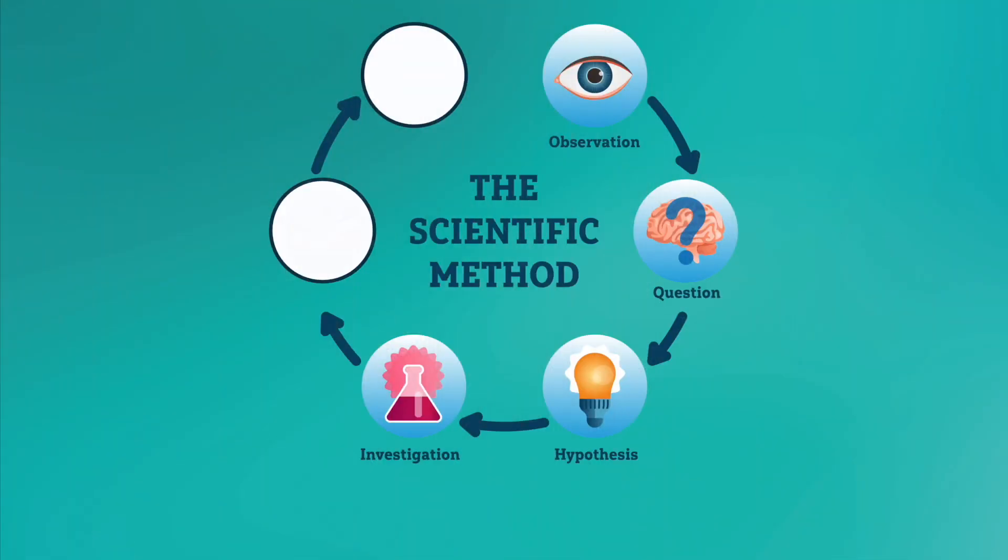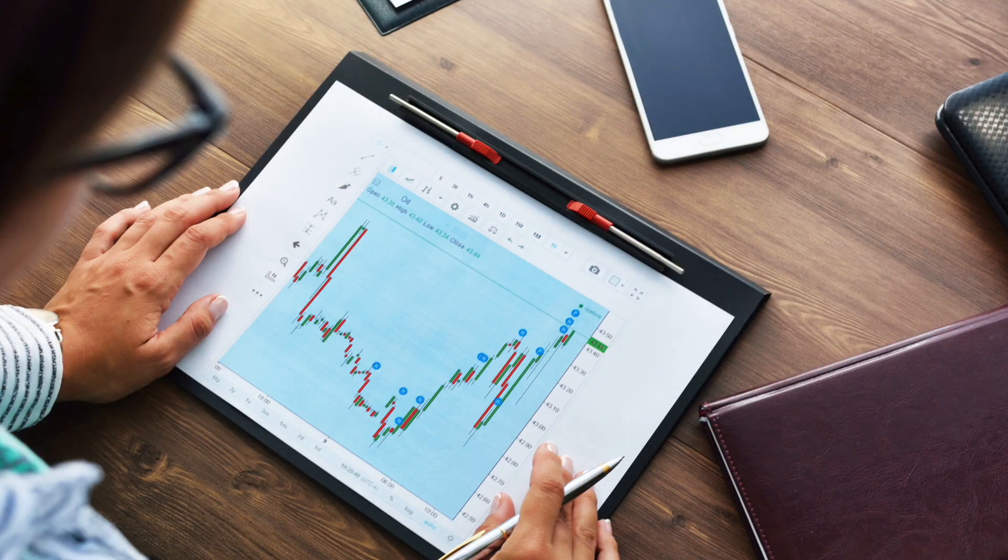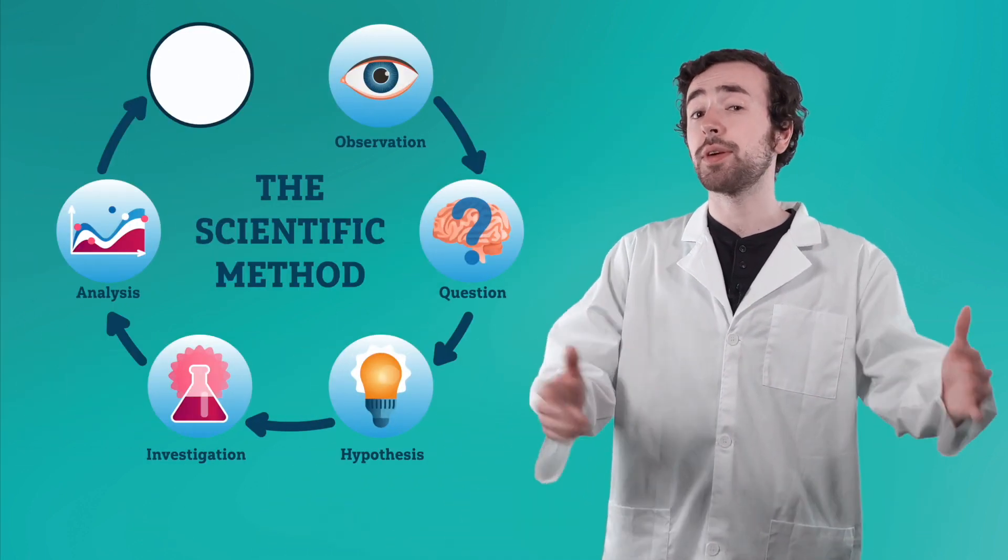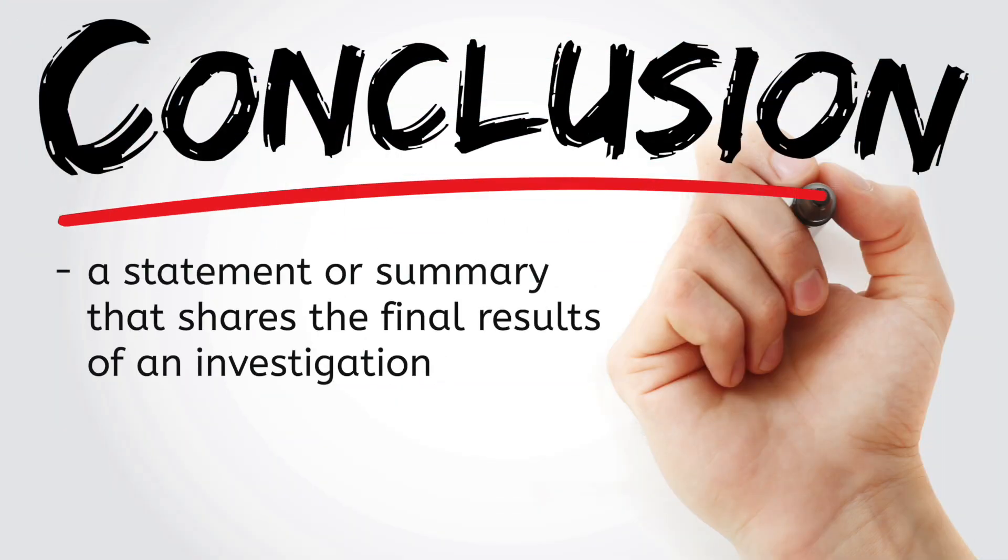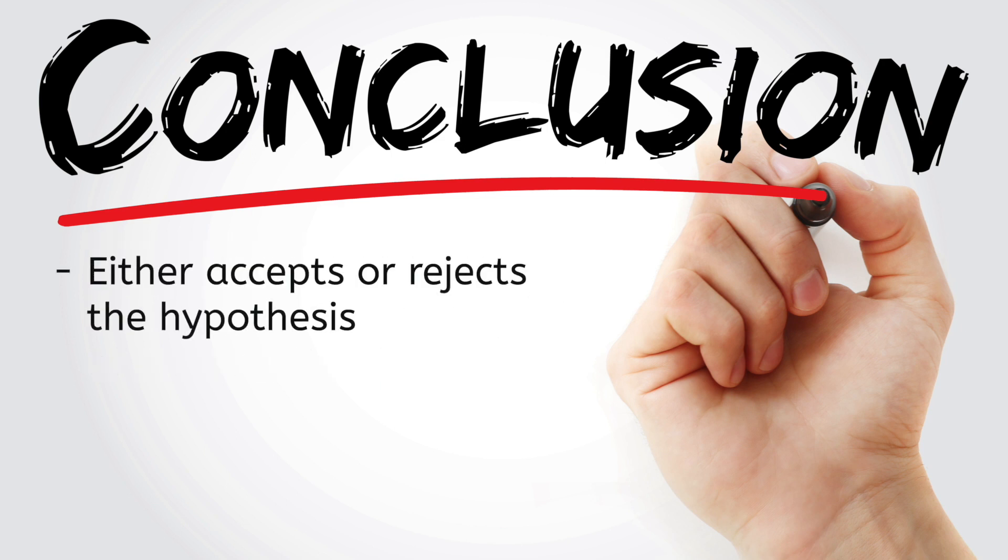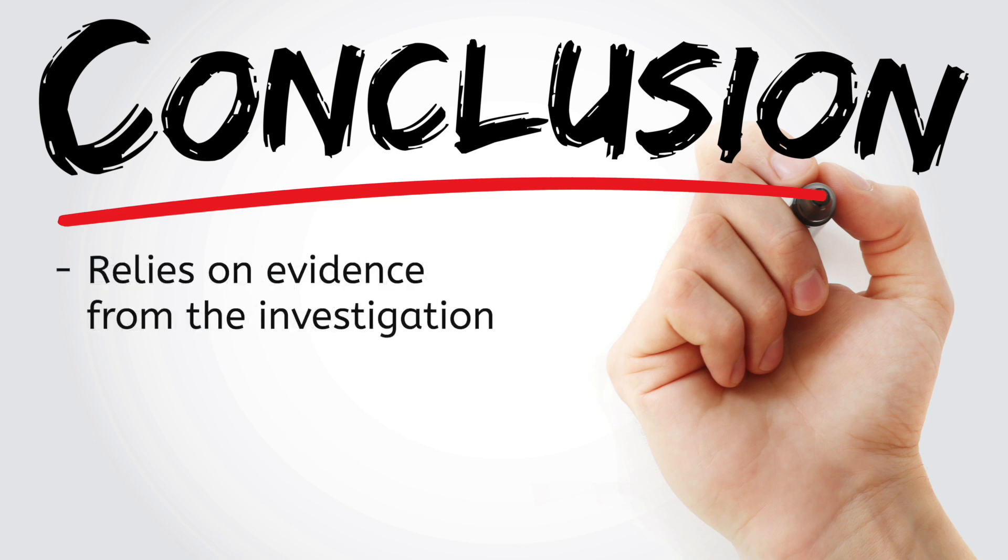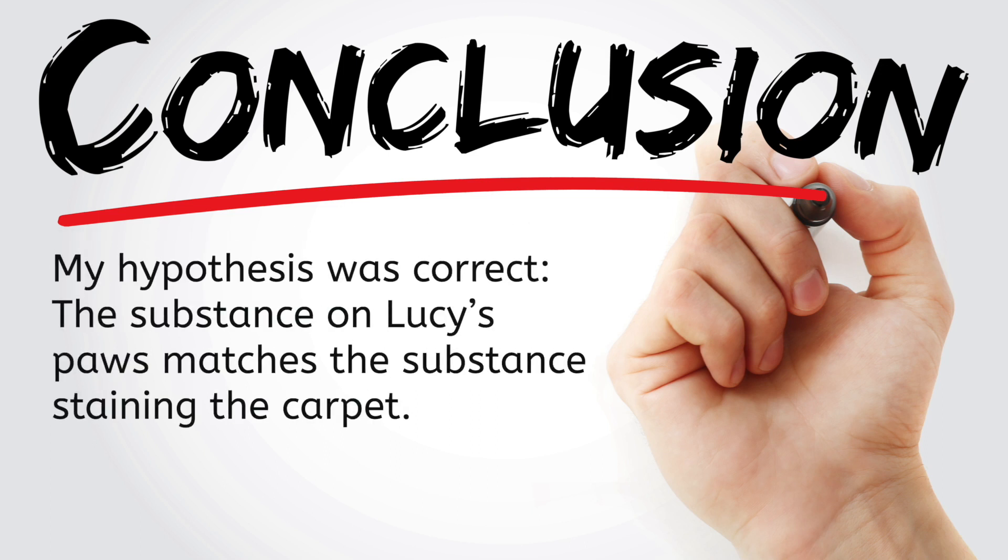Now it's time for the fifth step. Analyzing our results. In some investigations, this step could involve organizing data and calculating correlations, but for this investigation, it's basically just me checking to see whether or not what I found on the paws matches the stain on the carpet. I'm pretty confident, so I think we're ready to move on to our final step, the conclusion. Our conclusion is where we share our final results. When writing a conclusion, we either accept or reject our hypothesis, using evidence from our investigation to justify our results. In this case, I could say, my hypothesis was correct because the substance on Lucy's paws matches the substance staining the carpet.